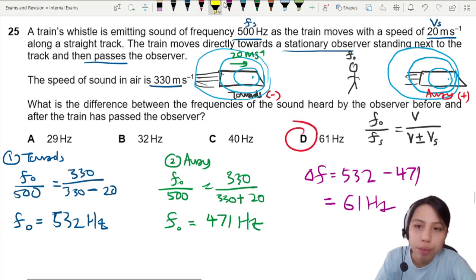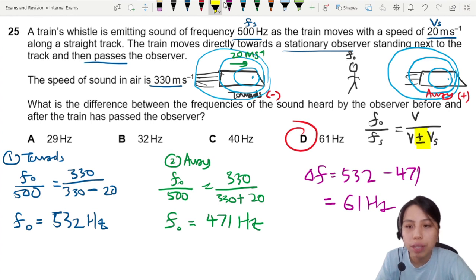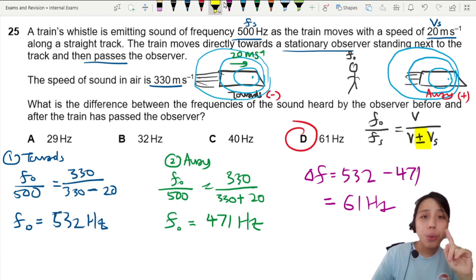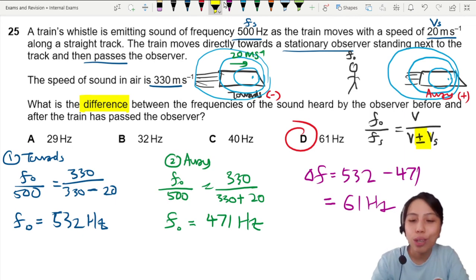Most important thing of Doppler effect is know when to use positive, negative. Equation is there already in the data formula sheet. You just need to know which sign to use. And read carefully—you're finding the difference. That's all for this question.